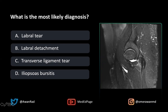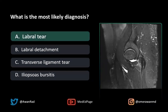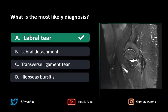The best answer here is a labral tear. We wouldn't consider a labral detachment because the signal would really be at the labral-chondral junction. If it was right under the articular cartilage, that would suggest a labral detachment.